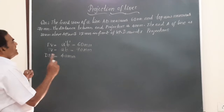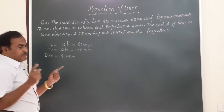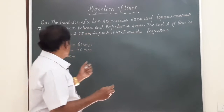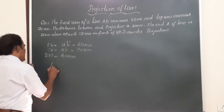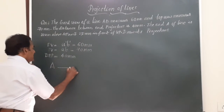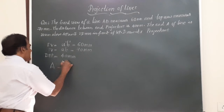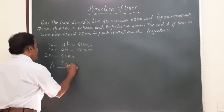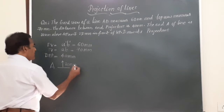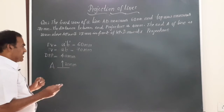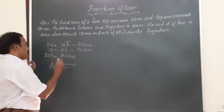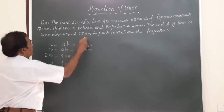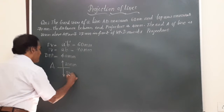Then finally, he says the end A of the line — the line AB has got two ends, one end is A and the other end is B. So, the reference line is here. He says end A is 20 mm above HP. So, 20 mm above HP means the same as 20 mm from HP. Similarly, they have also given it is 25 mm in front of VP.